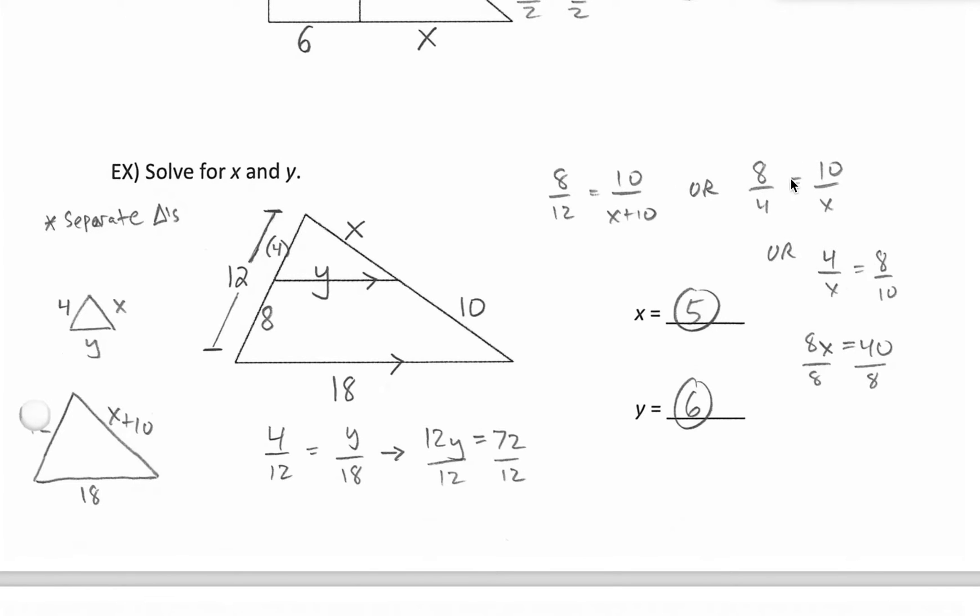So I'd rather use those for sure. Cross multiply. Our cross products are going to be the same. Either way, it's 8x equals 10 times 4, which is 40. Divide by 8. And we get x is 5.